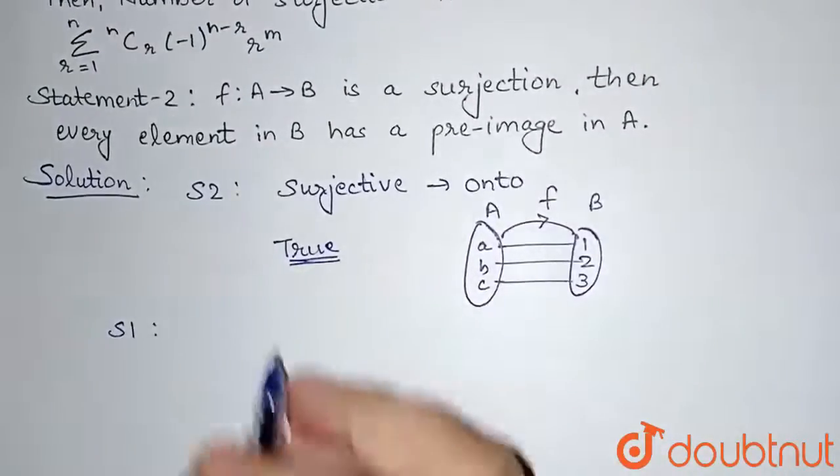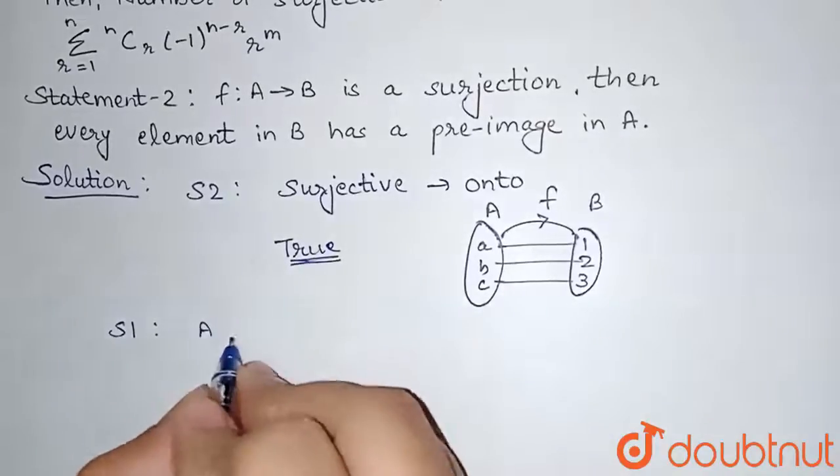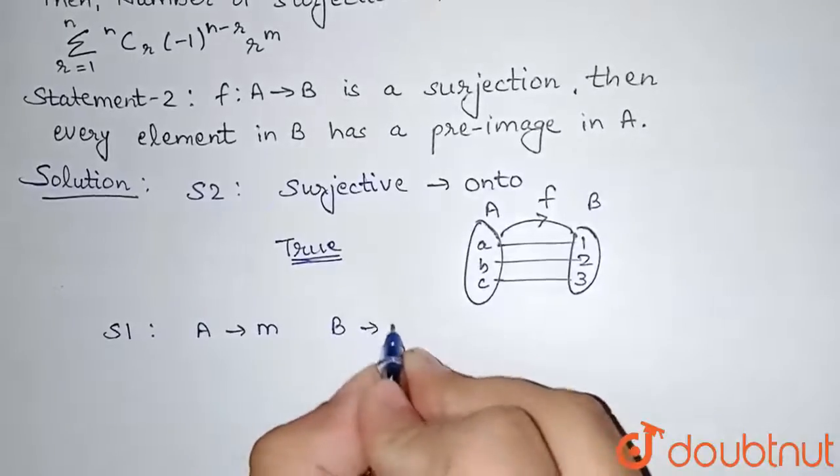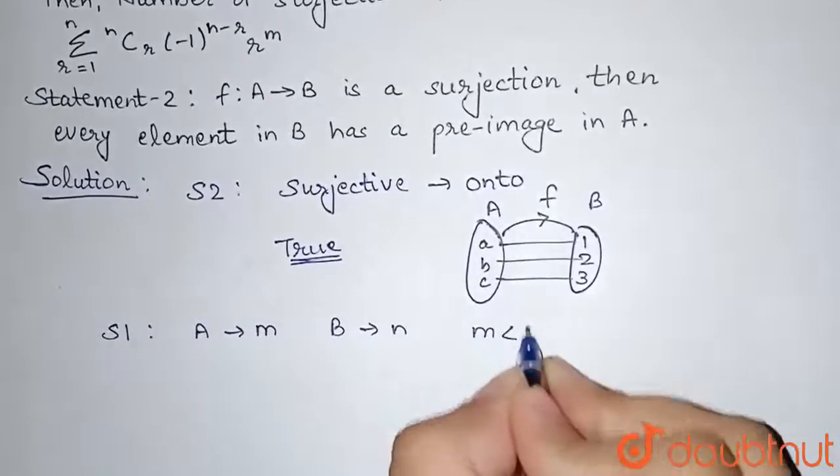Now we will be seeing statement 1. So in statement 1, we are given set A has M elements and set B has N elements and M is less than N.